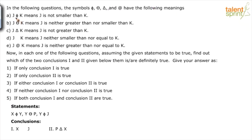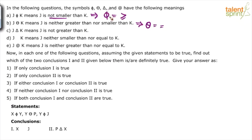Now look at this. J eta k means J is not smaller than k. If J is not smaller, it will be greater or equal. Then J theta k means J is neither greater nor smaller — if it is neither greater nor smaller, it means it is equal. So theta equals equal. This means greater than or equal to; theta means equal, because it is neither greater nor smaller.